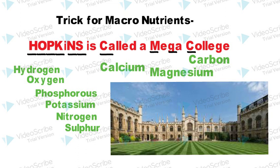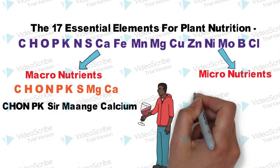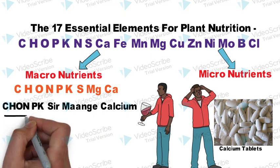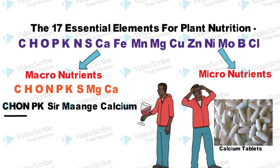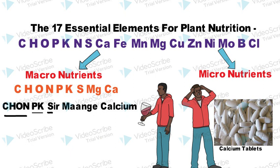For students who understand Hindi, we have a Hindi mnemonic: 'Khoon PK Sar Mange Calcium,' where C, H, O, N represent carbon, hydrogen, oxygen, and nitrogen respectively. In PK, P represents phosphorus and K represents potassium. S represents sulfur, 'Mange' represents magnesium, and calcium represents calcium.